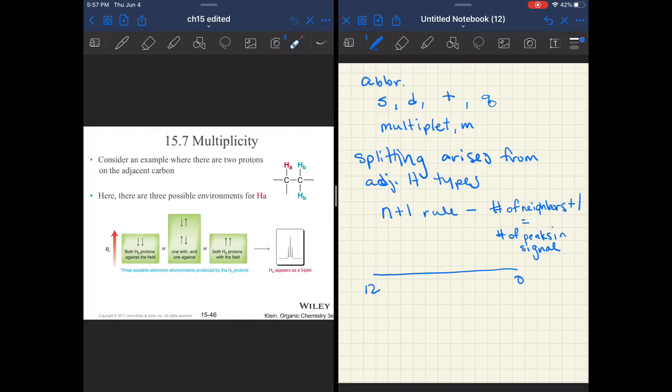Now, this is often called the N plus one rule. That is saying H-A has one neighbor, and so it is split into two peaks. So the N plus one rule is the number of neighbors plus one, and that will equal the number of peaks in your signal. Now that doesn't tell us how many H-As there are. That comes from integration. It only tells us that this type of proton has one neighbor. So what about a triplet? If we have, if H-A has two H-B neighbors, then you have four different possible scenarios.